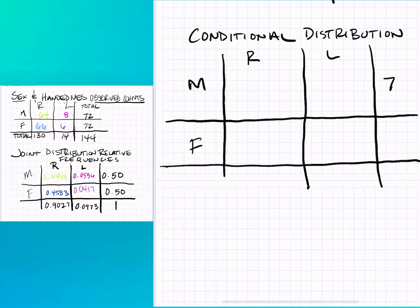So it's still a relative frequency but it will be calculated conditionally for the row. We'll be using 72 as our total for males and 72 for females.